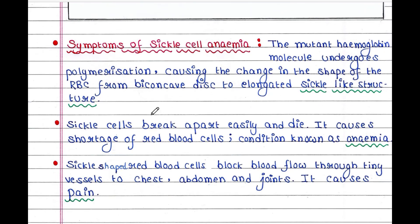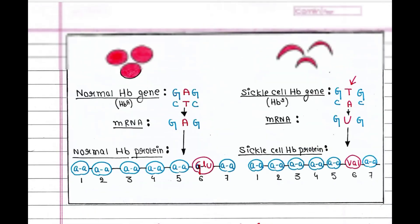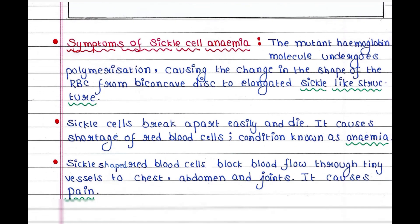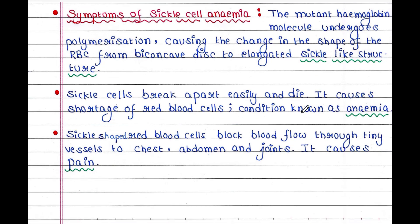Now let's see the symptoms of sickle cell anemia. The mutant hemoglobin molecule undergoes polymerization, causing a change in the shape of the RBC from a biconcave disc to an elongated sickle-like structure. Here we can see the normal shape of the RBC and the distorted sickle shape. Sickle cells break apart easily and die, causing a shortage of red blood cells — a condition known as anemia.